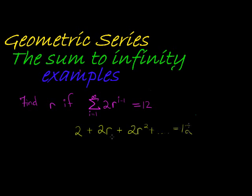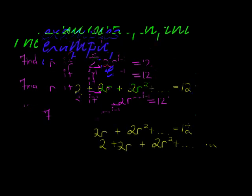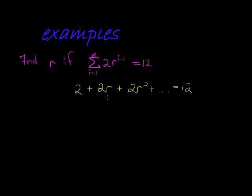So eventually we see dot dot dot, the ellipse tells us we're going to infinity. And here we see on the left hand side we are summing to infinity, so our sum to infinity is equal to 12.